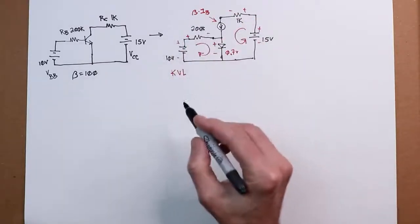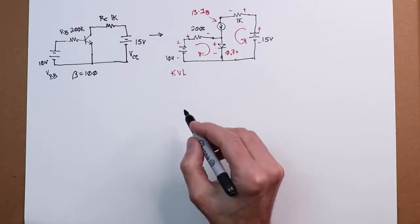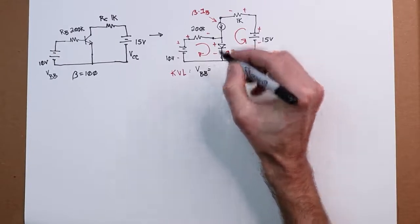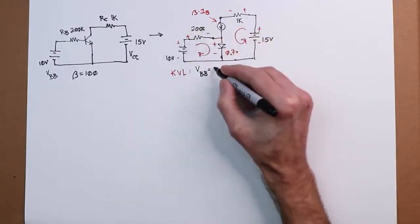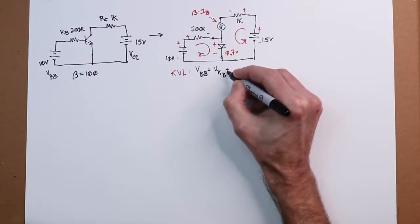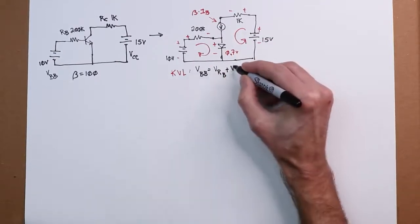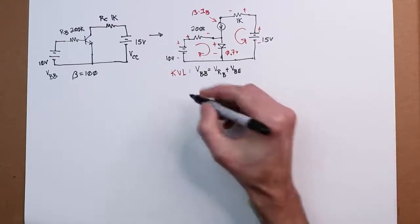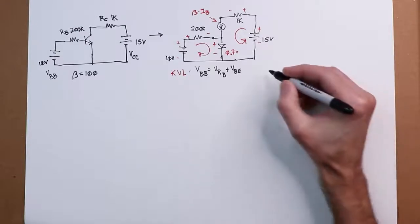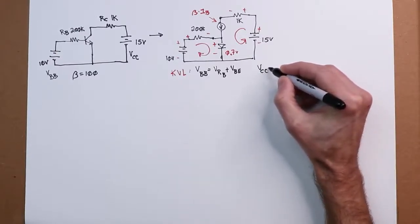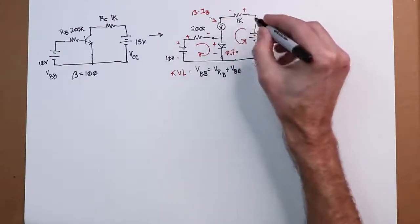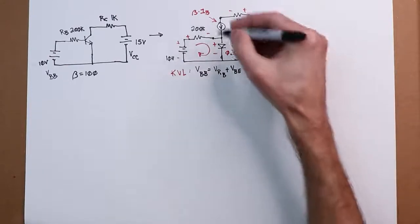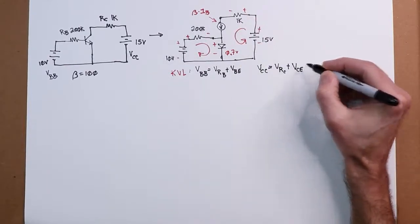Looking at this, we can create a couple of equations. Looking at our first loop, we can say that the base power supply, that's the rise, is going to equal the drop across the base resistor V of RB plus the drop across the base emitter VBE. We can also say that the collector voltage, that power supply, has to equal the drop across the resistor V of RC and the drop across the transistor VCE.